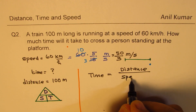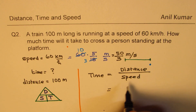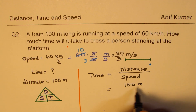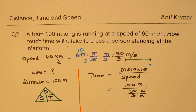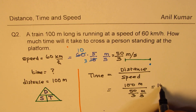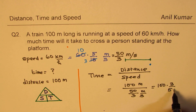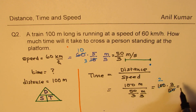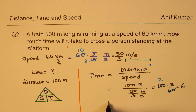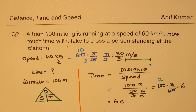Time equals distance over speed, so time equals 100 meters divided by 50 over 3 meters per second. This simplifies to 100 times 3 over 50, which equals 6 seconds. The meters cancel, giving us 6 seconds as the answer. These are very common values seen in multiple choice test papers.